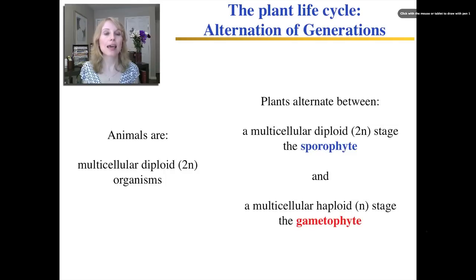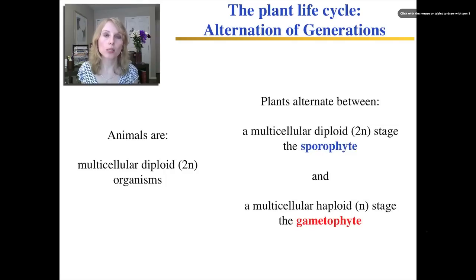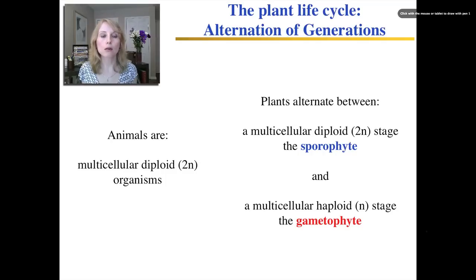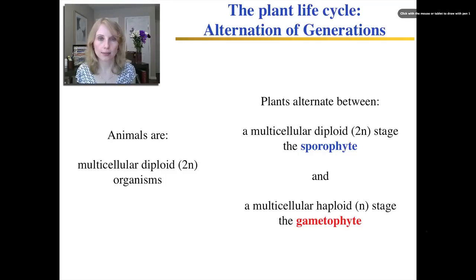Plants, they alternate. They alternate between a multicellular diploid stage called the sporophyte and a multicellular haploid stage called the gametophyte. Now let's look at it in more detail.